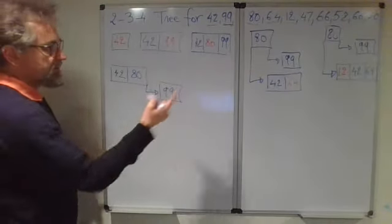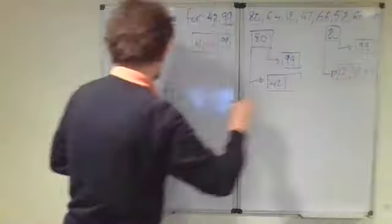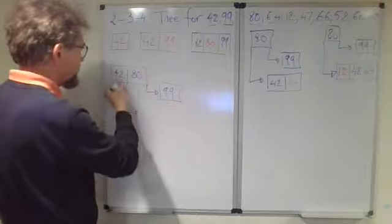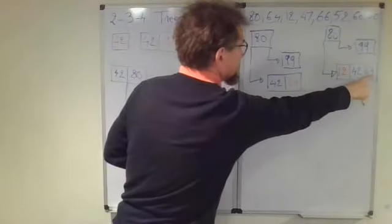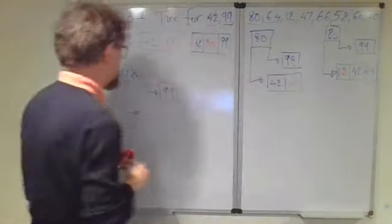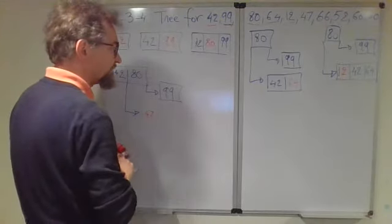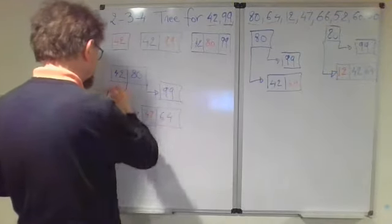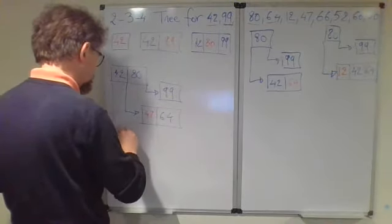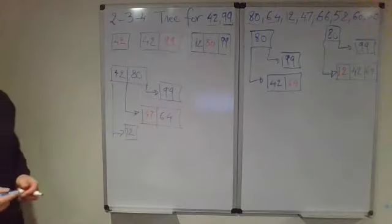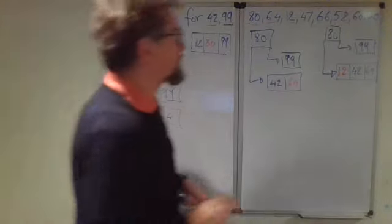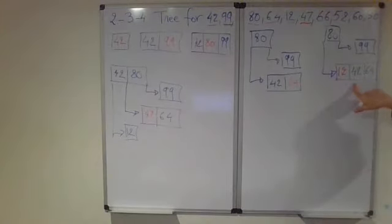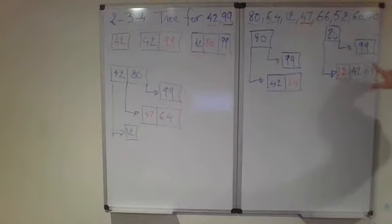Then this node here gets splitted. What is at the left of 42 remains at the left. What is here at the right is 64, but also our new number 47, which comes actually before the 64.